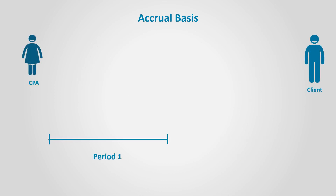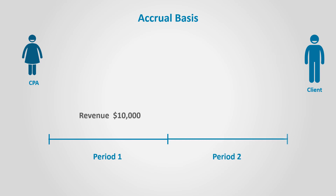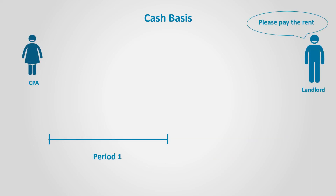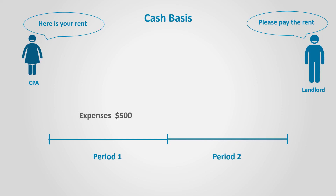Now let's assume that the same transactions happened but used the accrual basis. So the CPA did the work in period 1 and sent the bill to the client — this is regarded as revenue in period 1. When the client pays in period 2, this is not regarded as revenue for that period; it is just collections for the amounts due. When the CPA received the rent bill, he paid it in period 1. This is regarded as an expense, whether it is paid or not, since the rent service is consumed to generate revenue. The rent for period 2 is also recognized as an expense, even though it is not paid, since the rent service is still used in period 2.